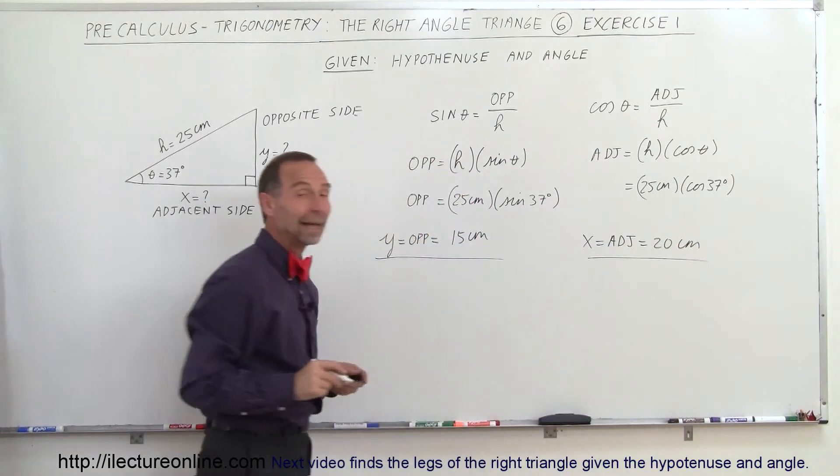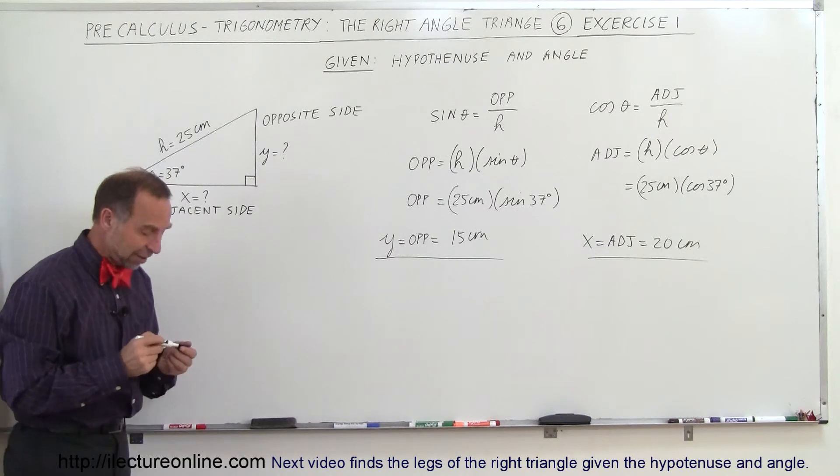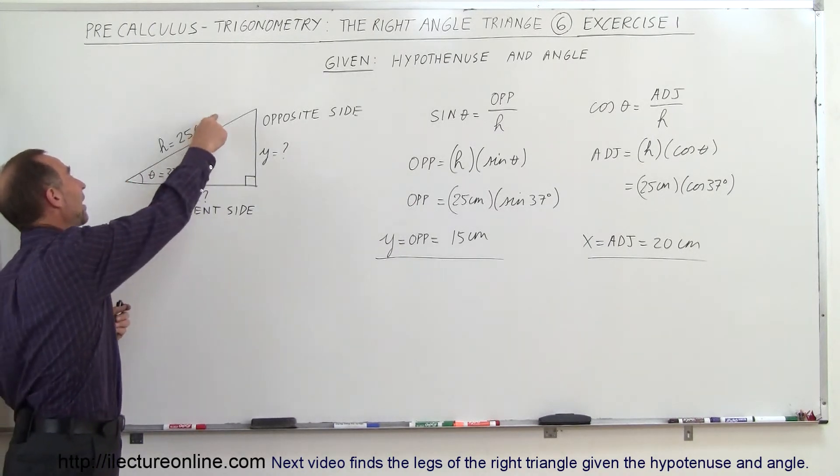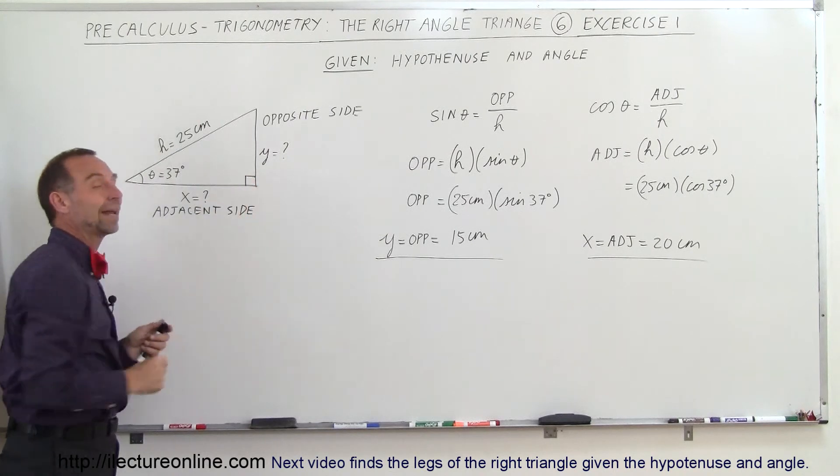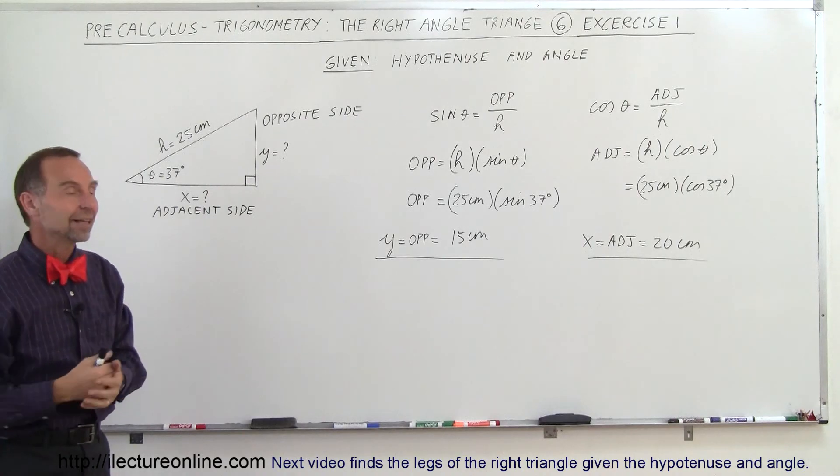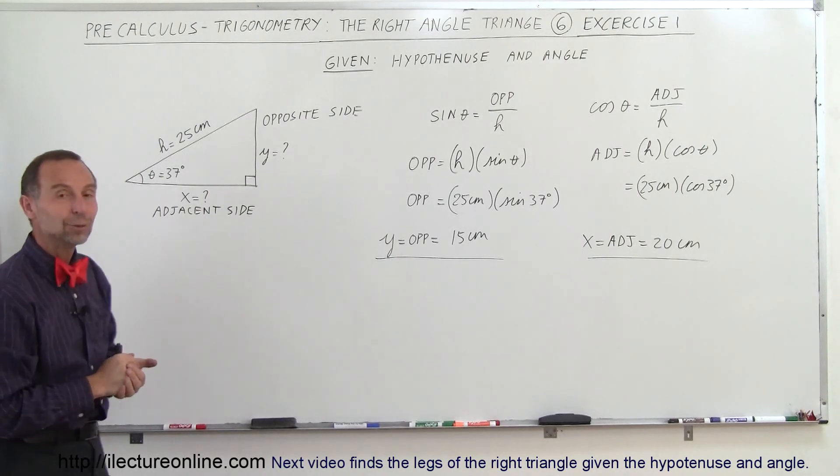And that's how we go ahead and do that. So that's how we find the unknown sides, realizing we know one side, one angle, and realizing it's a right angle triangle. So in essence, we know two angles and one side, and we can find everything else about the triangle.